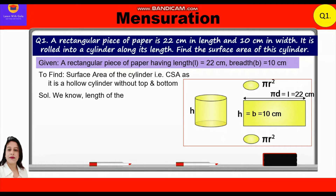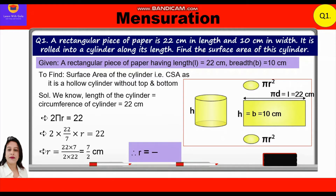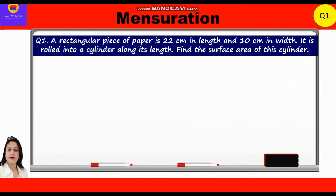The length of the rectangle is equal to the circumference of the cylinder, which is 22 centimeters. So 2πr = 22, giving 2 × (22/7) × r = 22. Solving, r = (22 × 7) / (2 × 22) = 7/2 centimeters. Therefore, the radius of the cylinder is 7/2 centimeters.